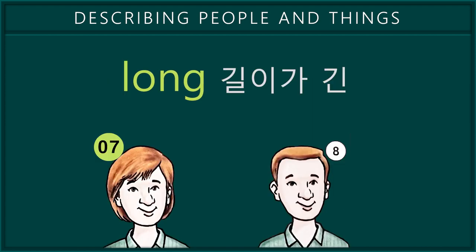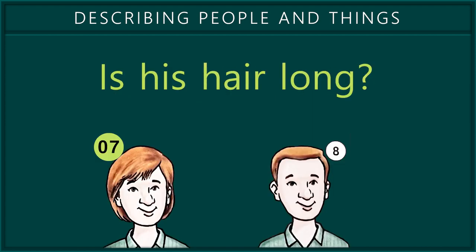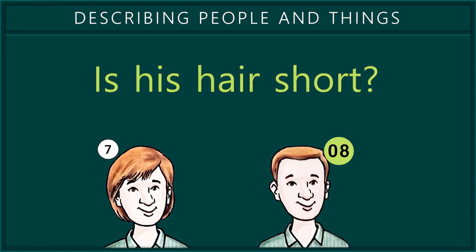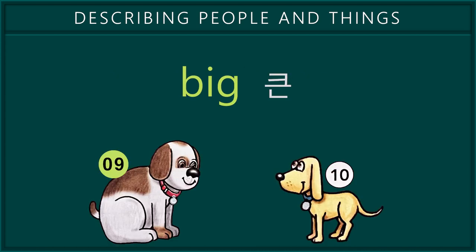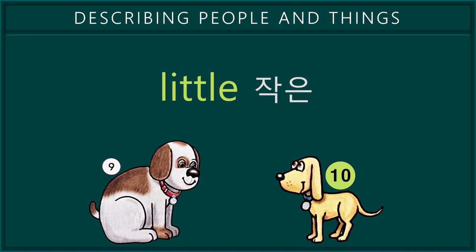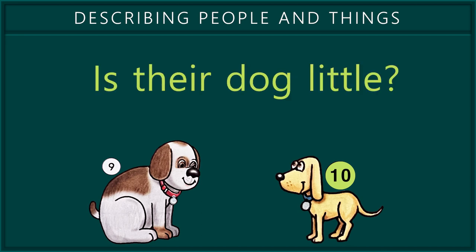7. Long. Is his hair long? 8. Short. Is his hair short? 9. Big. Is their dog big? 10. Little. Is their dog little?